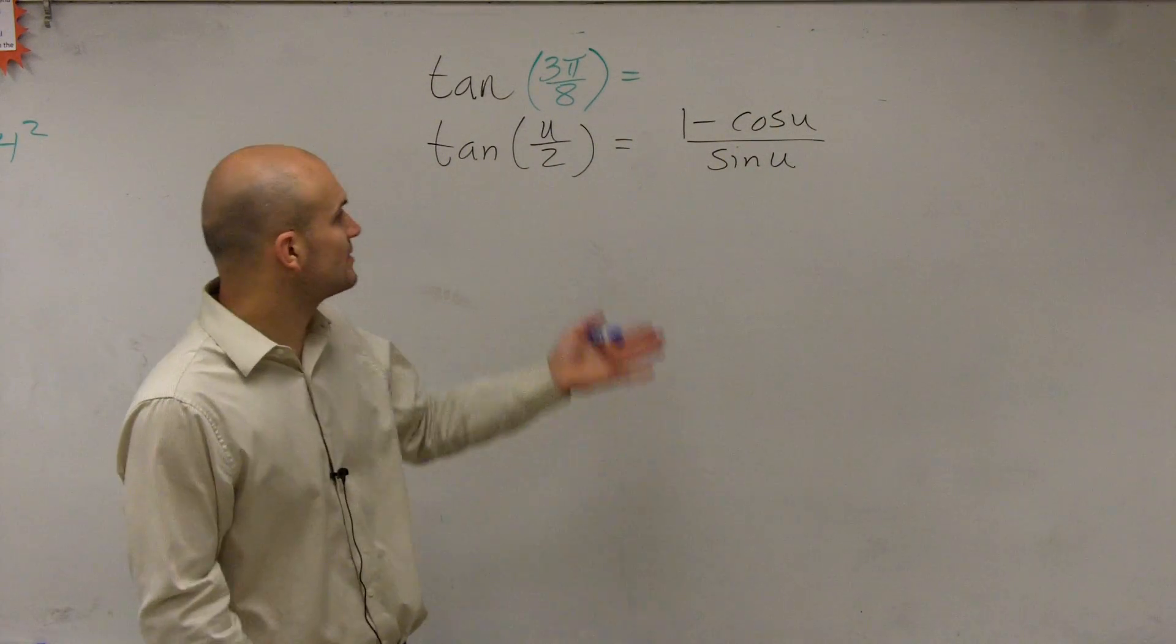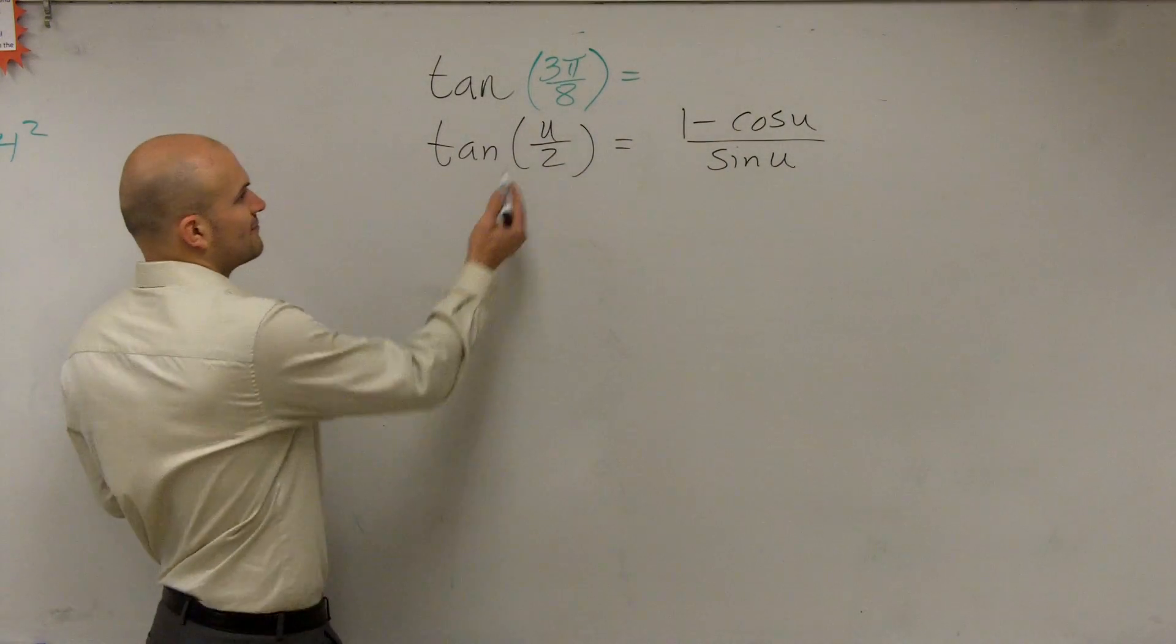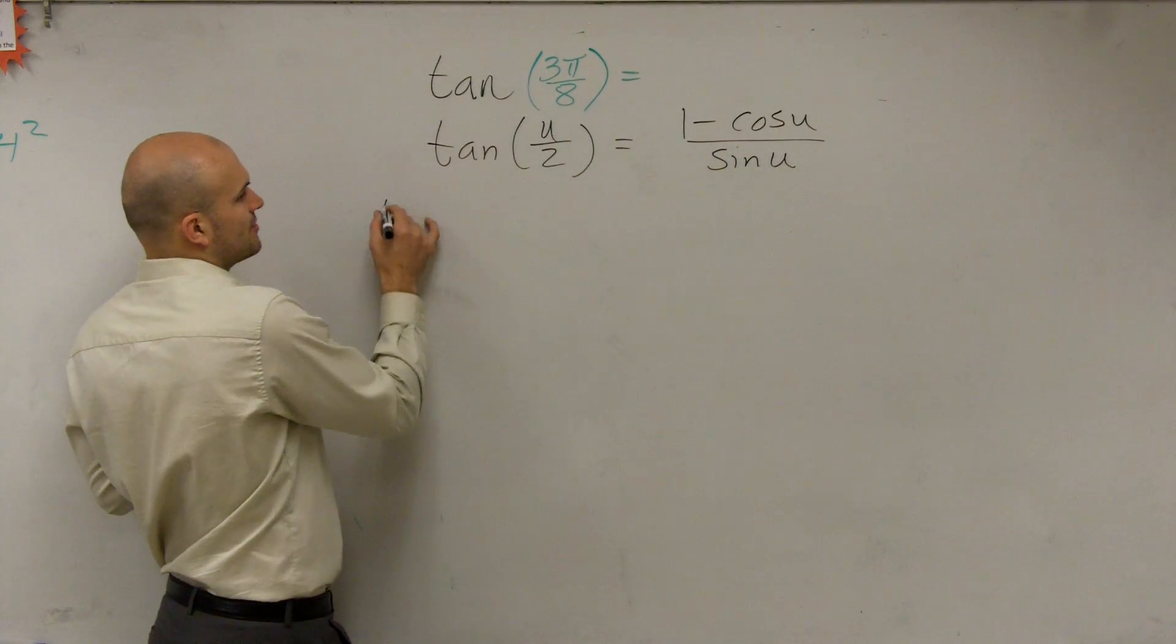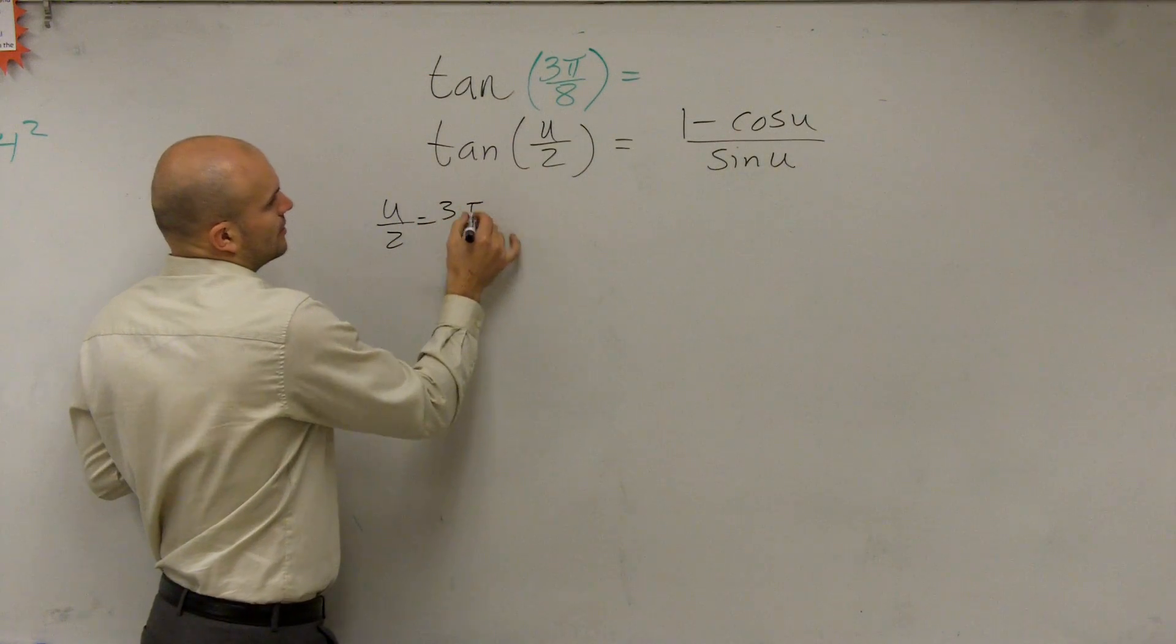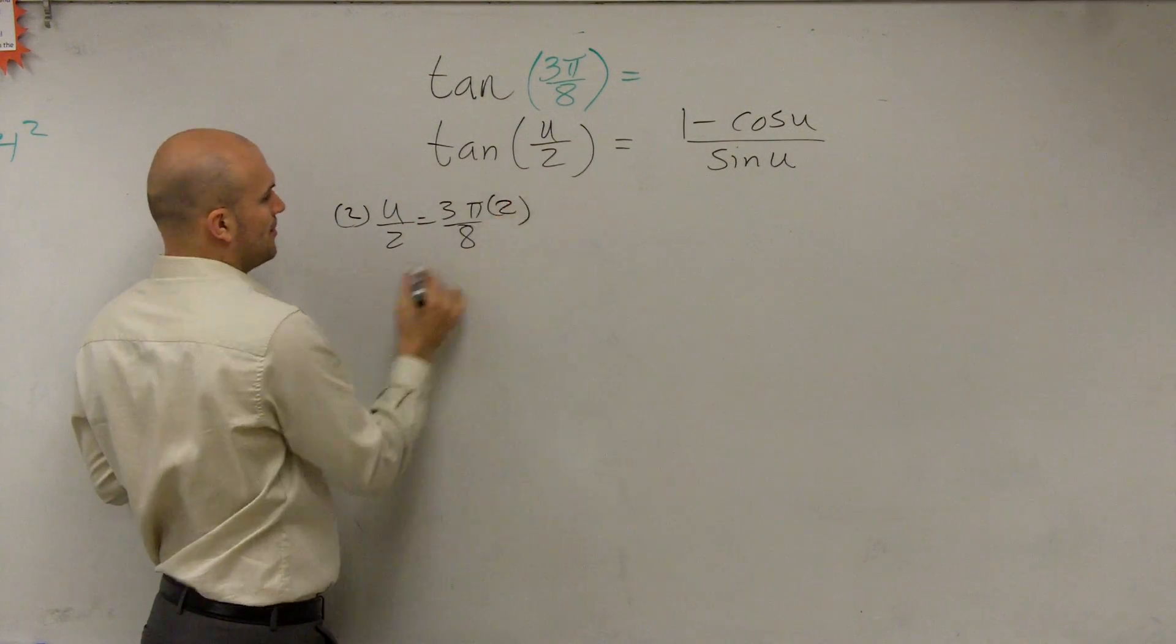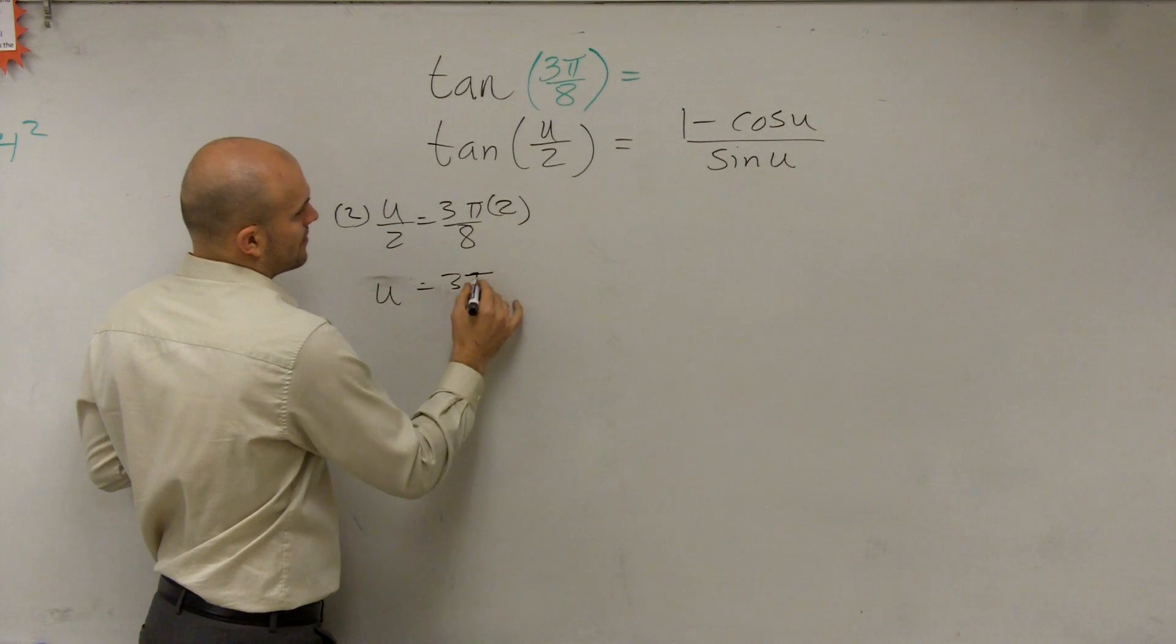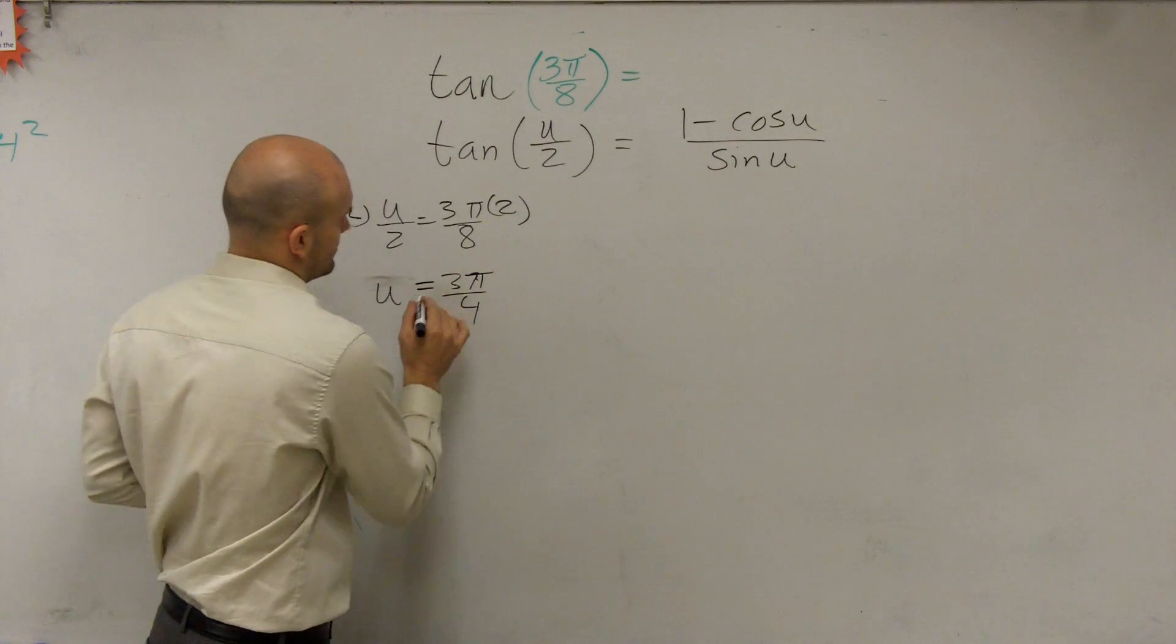So again, for this problem, like I said, we just have 3 pi over 8 equals u over 2. Let's go ahead and evaluate for u over 2. So we know u over 2 is equal to 3 pi over 8. We've done this already. So we know that when multiplying by 2 on both sides, that we have u equals 3 pi over 4. Right?